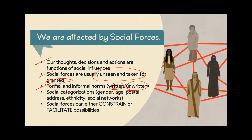Formal norms, on the other hand, are written either in terms of policy or law, and if you do not follow them, you can get into trouble, face penalties, or go to jail. Our choices and destinies are also limited or facilitated by social categorization such as gender, age, postal address, ethnicity, and social networks. For example, in the sciences, females cannot easily penetrate because it's a masculine, patriarchal institution — we'll talk about that in a while.